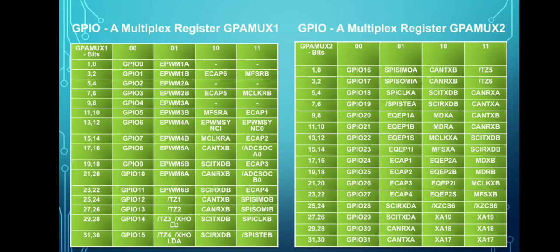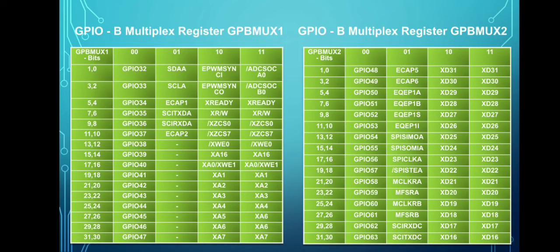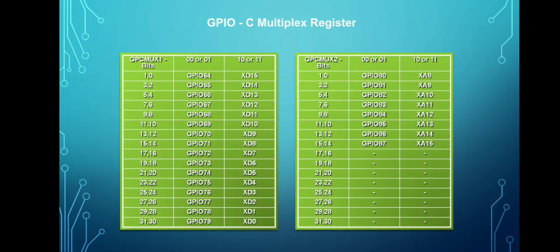As shown in the table, if the MUX register is set to 00, all pins will act as GPIO pins. If GPAMUX1 bit equals 01, the pin will act as an ePWM pin. If GPAMUX2 is set to 01, the pin can be used for a different purpose as shown. All pins can be used for different purposes by selecting the MUX register values 00, 01, 10, and 11 respectively. This is how the GPIO MUX registers are controlled.